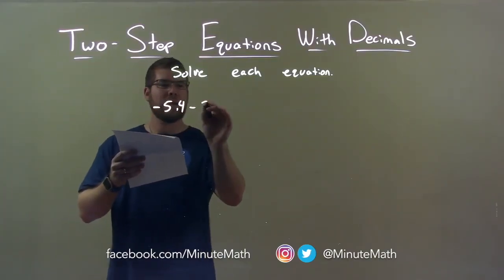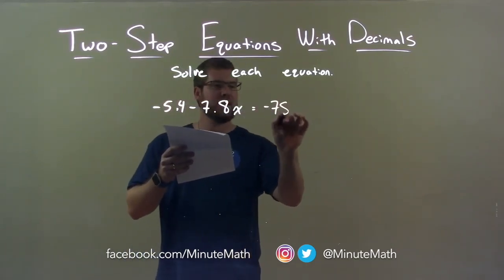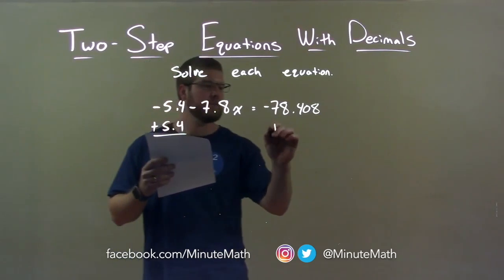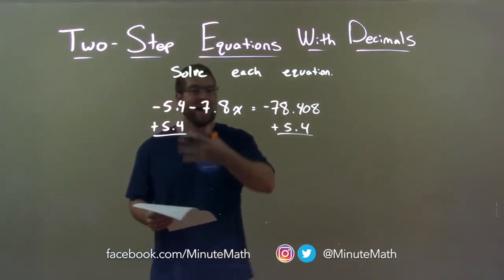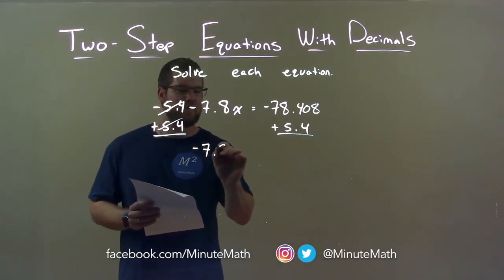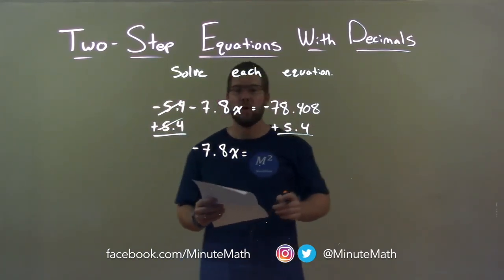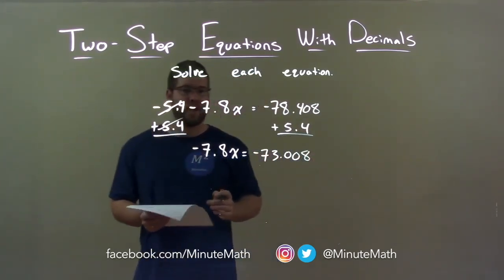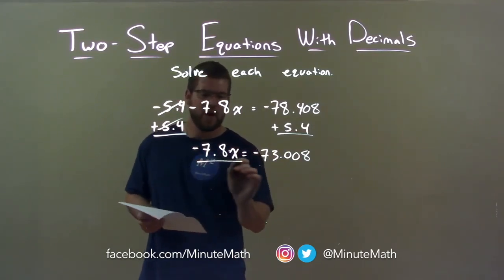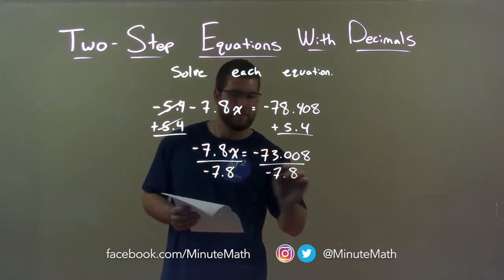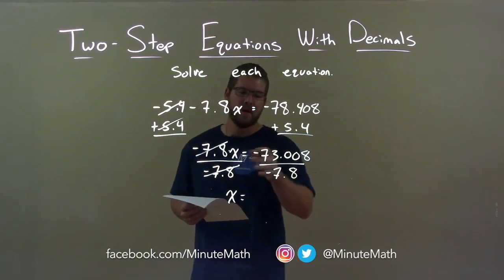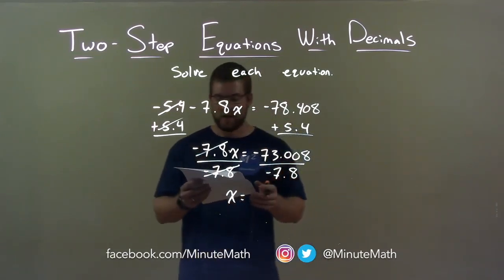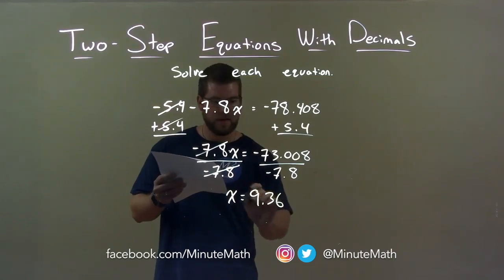Negative 5.4 minus 7.8x equals negative 78.408. First thing I want to do is add 5.4 to both sides. We have negative 5.4, so when I add 5.4 to both sides, that gets eliminated. I have negative 7.8x by itself on the left, and negative 78.408 plus 5.4 comes out to be negative 73.008. Still want to get x by itself — it's being multiplied by negative 7.8. If I divide both sides by negative 7.8, the negative 7.8 cancels, giving me x. Negative 73.008 divided by negative 7.8 — remember, negative divided by negative is positive — gives positive 9.36. And there is our final answer.